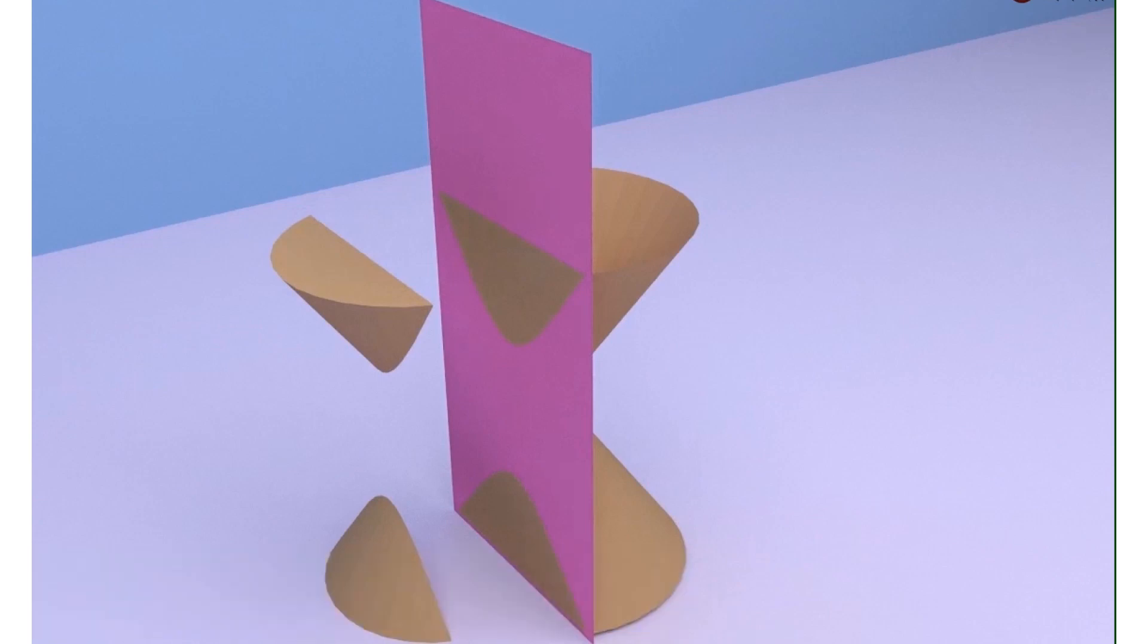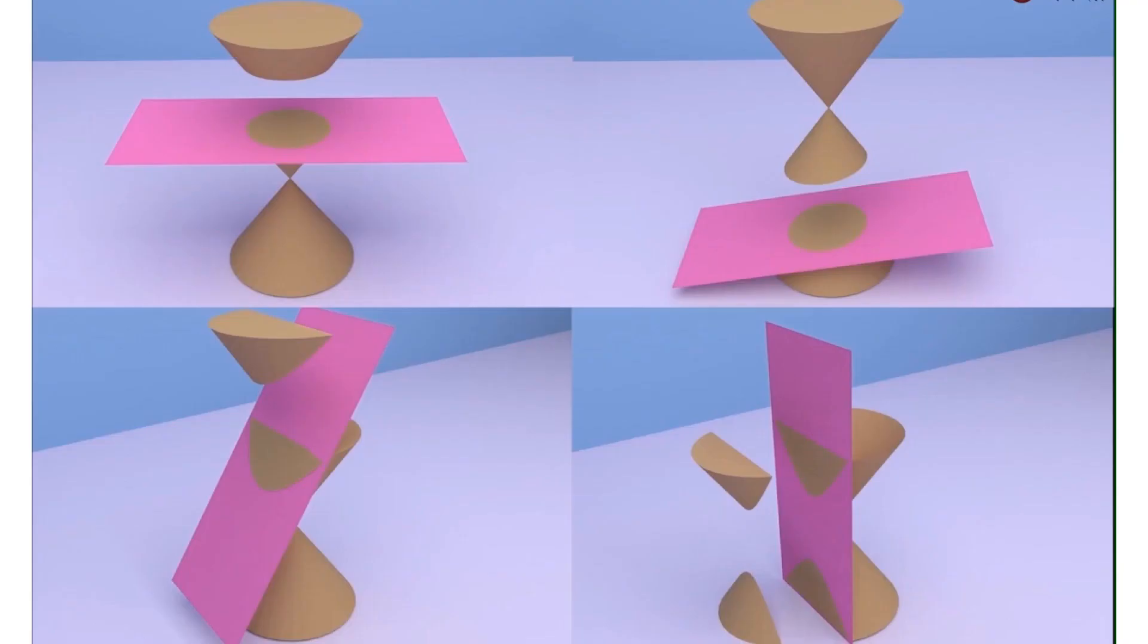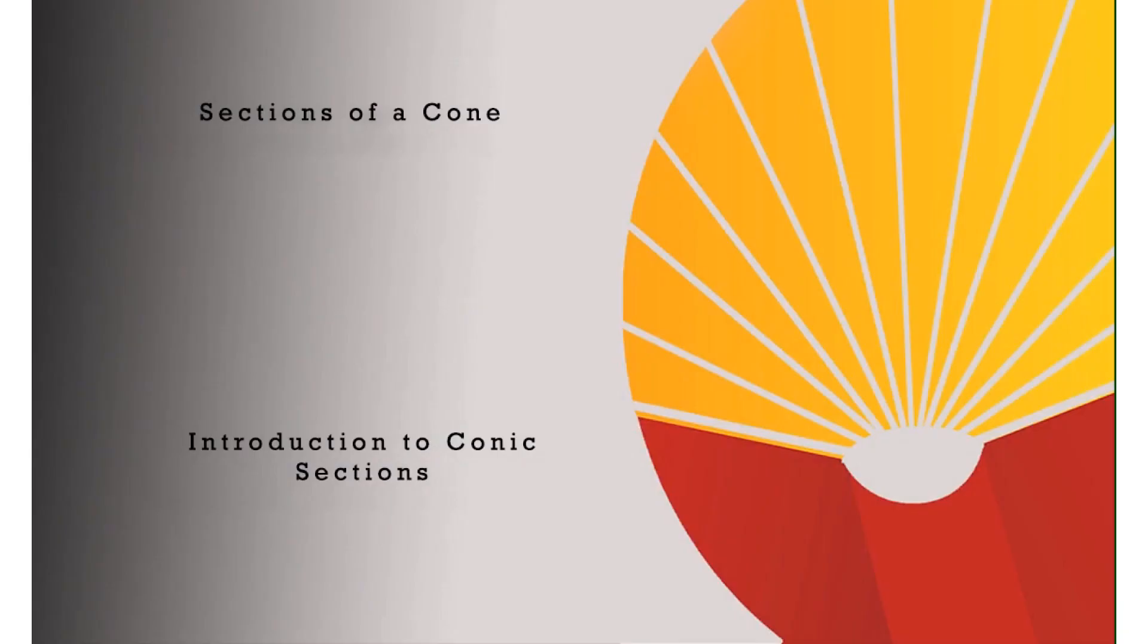So what we saw here was we can get four different shapes by the same double right circular cone by cutting it at four different angles. And these shapes are called the conic sections.